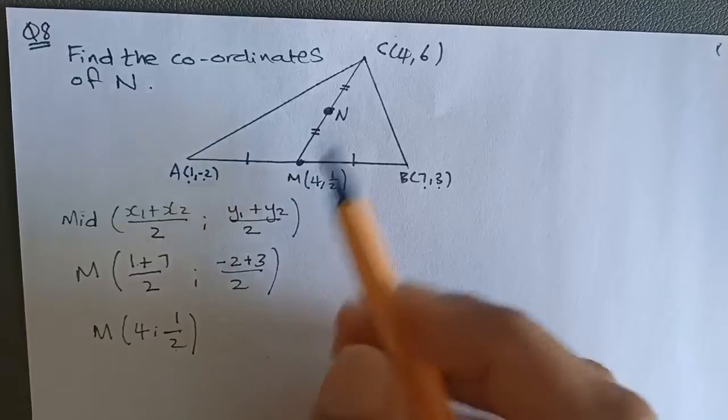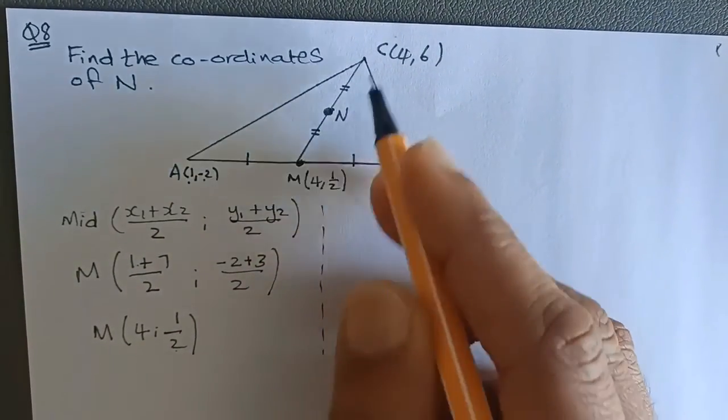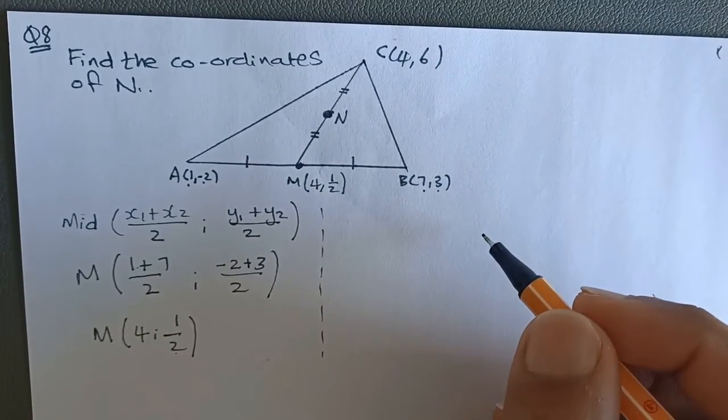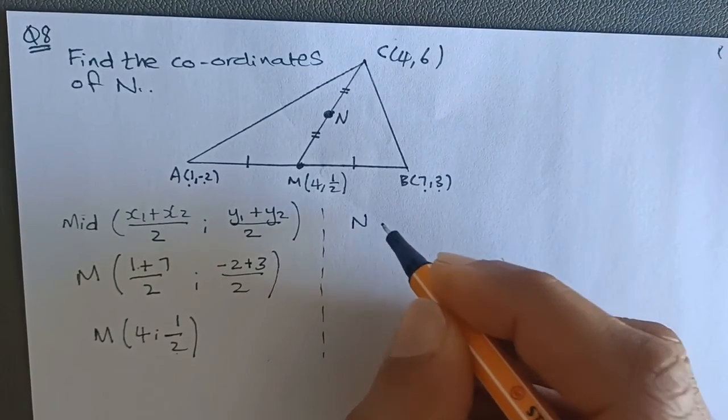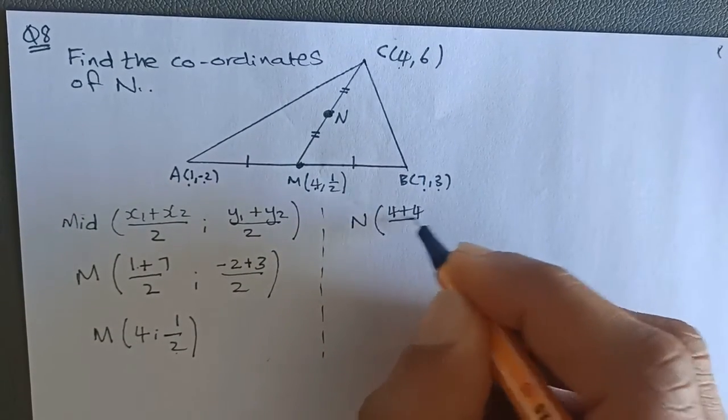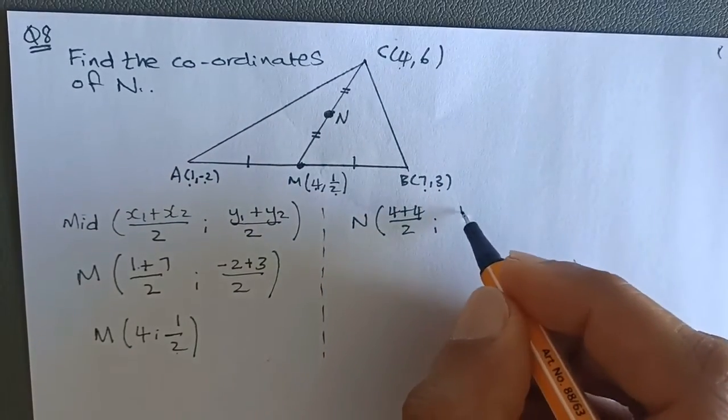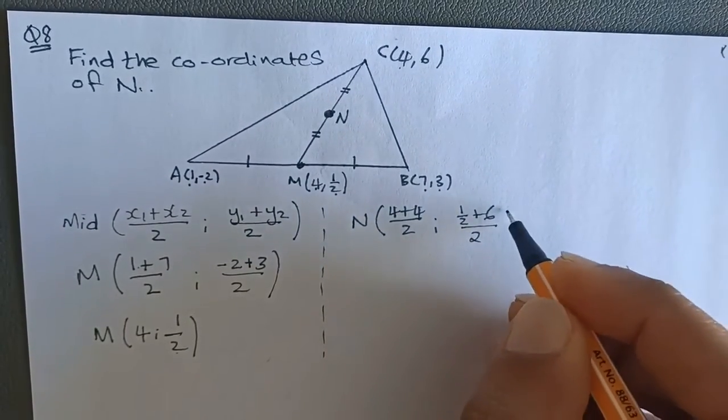We can now use M and C and repeat the same process, finding midpoint of MC, which is N, and that will give me the answer for N. So to do this, we would say N will become 4 plus 4 divided by 2, half plus 6, which is 6 and a half, divided by 2.